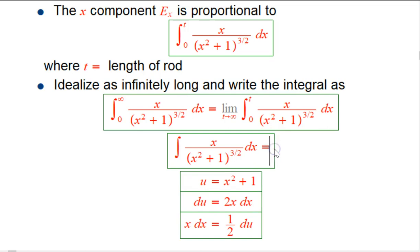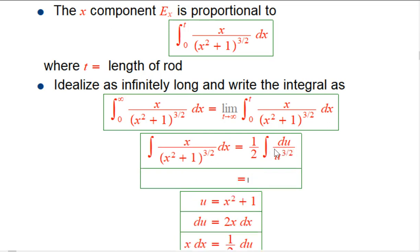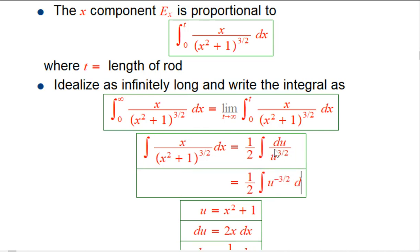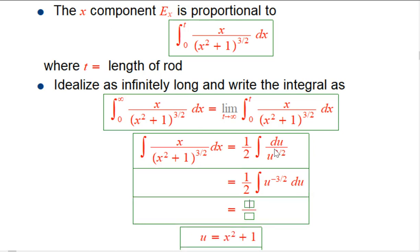Looks like I'm ready to roll here. This is the integral of, let's see, the one-half will come out, of du over u to the three-halves. I feel like I should write that as a negative exponent. That's u to the minus three-halves du.